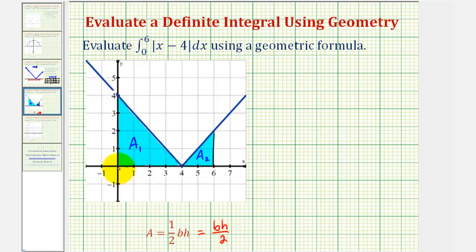Notice how this first triangle has a base of four and also a height of four. And the second triangle has a base of two and a height of two.